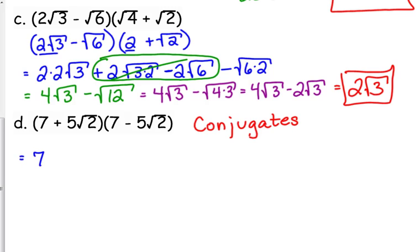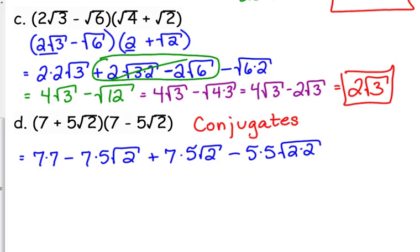First times first, seven times seven. The outside is a negative, seven times five times the square root of two. I'm just writing everything out. The inside gives us a positive seven times five square root of two. The last, a positive times a negative is a negative. Five times five, and the square root of two times the square root of two gives us the square root of two times two.